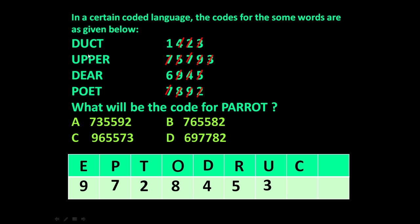In 'duct' — D, U, C, T — only C is left, so the code for C is 1. And in 'deer', D, E, E, R — the remaining letter is A from the other words, so the code for A will be 6.